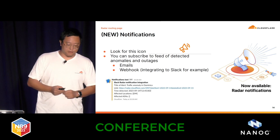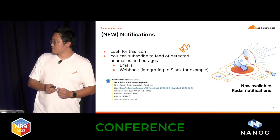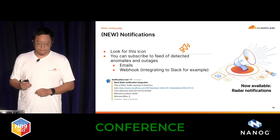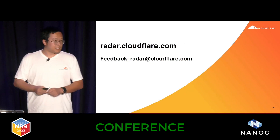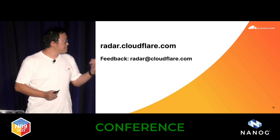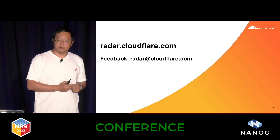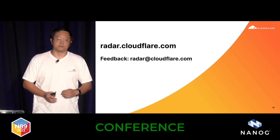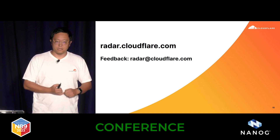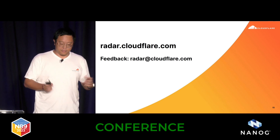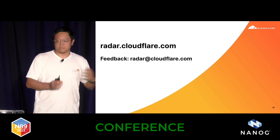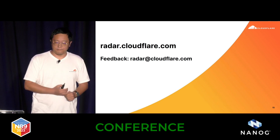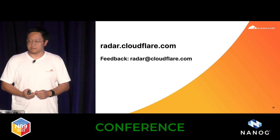Here's a screenshot of a Slack notification sent to a Slack channel via webhook. So that's everything — just go to radar.cloudflare.com and check it out. We've got plenty of goodies there: not only routing information, but also outages, DNS rankings, and a bunch of other things. If you see anything incorrect or want to suggest features to add to Radar, please send an email to radar@cloudflare.com. Thank you.